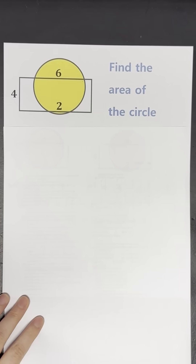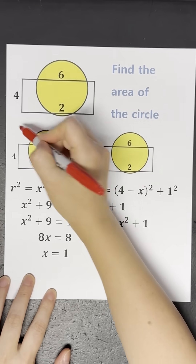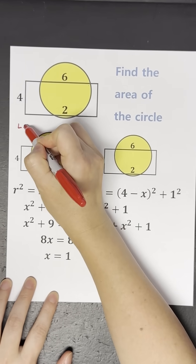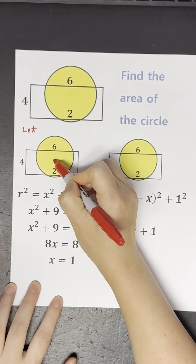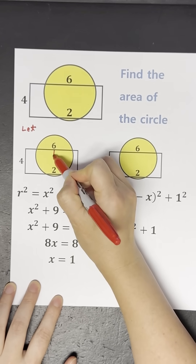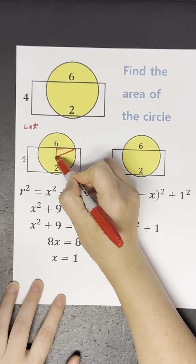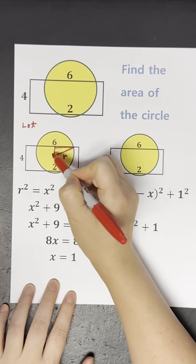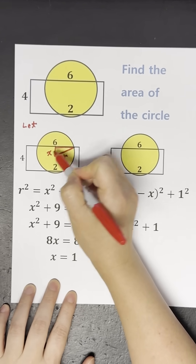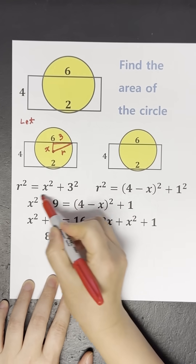Let's find the area of the yellow circle. We'll use the Pythagorean theorem. First, let this right triangle have sides R for radius, X, and 3.